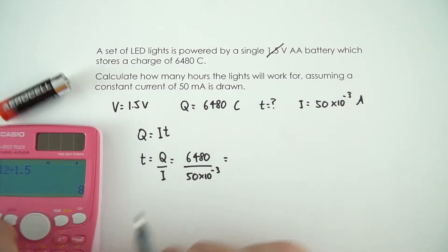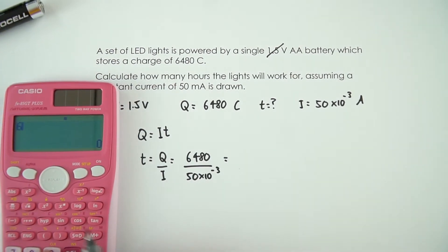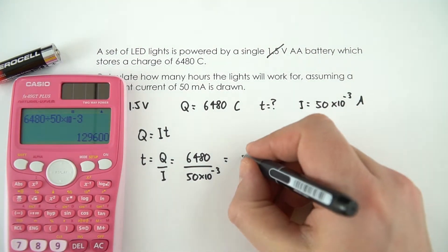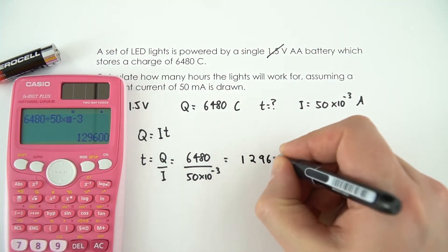And when we put the numbers into our calculator, 6480 divided by 50 times 10 to the minus 3, this gives a value of 129600.